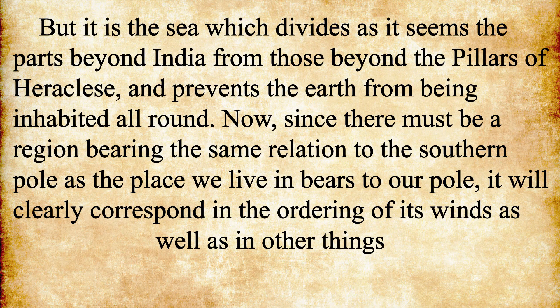The next man to theorize on Terra Australis was Aristotle. In part five of his book series on meteorology, Aristotle describes the limitations of human settlement, stating: 'But it is the sea which divides, as it seems, the parts beyond India from those beyond the pillars of Heracles, and prevents the earth from being inhabited all round. Now, since there must be a region bearing the same relation to the southern pole as the place we live in bears to our pole, it will clearly correspond in the ordering of its winds, as well as in other things.' This suggests Aristotle's belief in a land beyond the known seas, and he goes on to introduce the theory of symmetry — with the symmetry of winds in the northern and southern hemispheres.